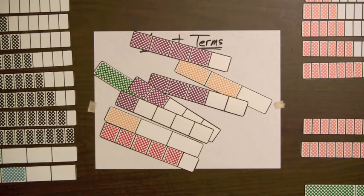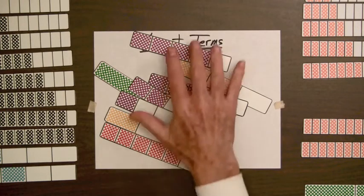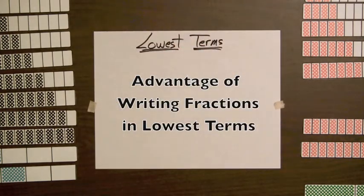Before leaving this topic, let's think about the advantages of writing fractions in lowest terms. Suppose there are thirty fifth graders out for the soccer team and ten played on last year's team.